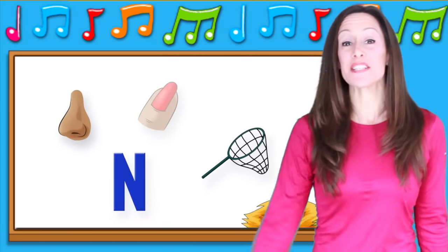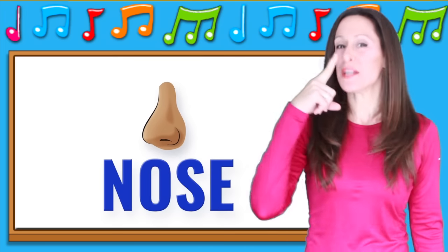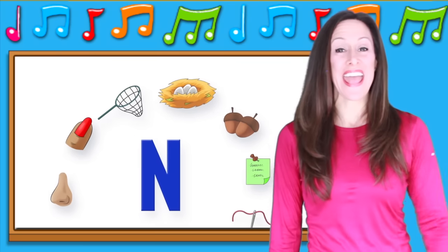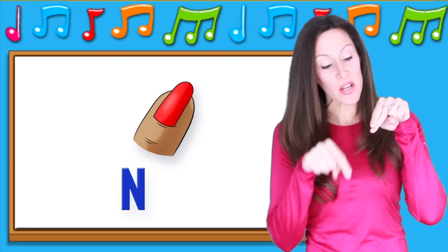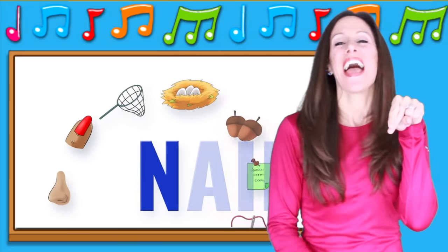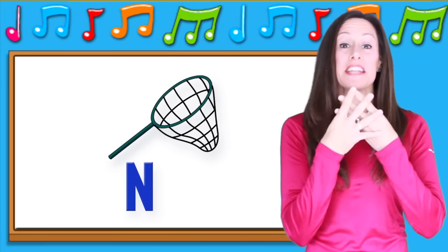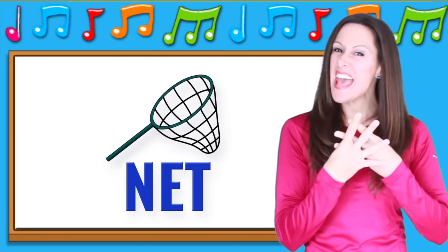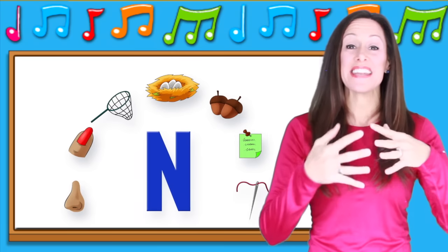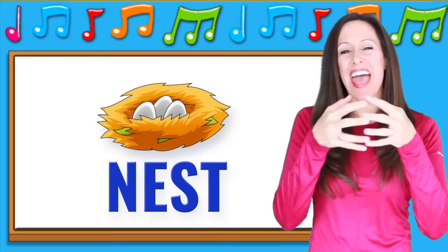N is for n-n-nest. N is for n-n-nose, n-n-nose. N is for n-n-nail, n-n-nail. N is for n-n-net, n-n-net, n-n-net. N is for n-n-nest, n-n-nest.